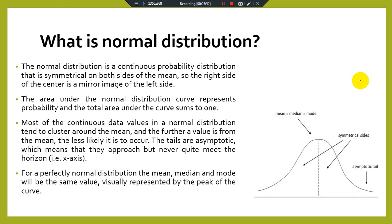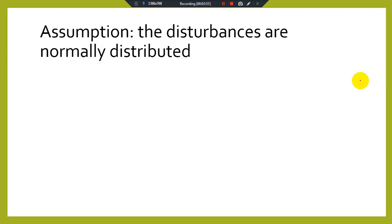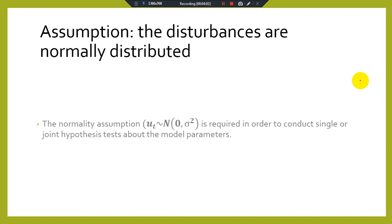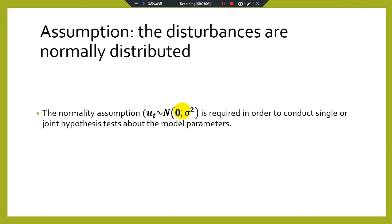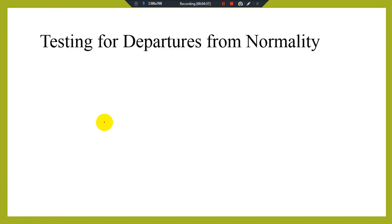If our error term series has a graphical representation that looks like this bell shape, then we can say our error term is normally distributed. The normality assumption is required — error is normally distributed with mean zero and constant variance — in order to conduct single-variable or joint hypothesis testing about the model parameters. If we need to test individual parameters or parameters as a whole, we check whether our series of the selected variable, particularly the error term, is normally distributed.